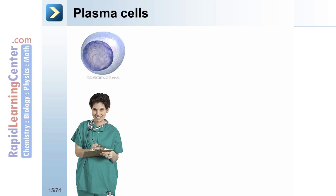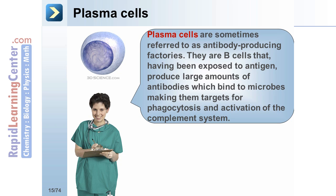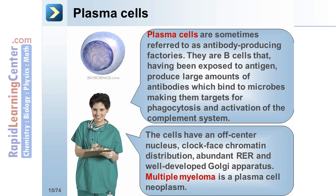Plasma cells are sometimes referred to as antibody-producing factories. They are B cells that, having been exposed to antigen, produce large amounts of antibodies which bind to microbes, making them targets for phagocytosis and activation of the complement system. The cells have an off-center nucleus, clock-face chromatin distribution, abundant rough ER, and well-developed Golgi apparatus. Multiple myeloma is a plasma cell neoplasm.